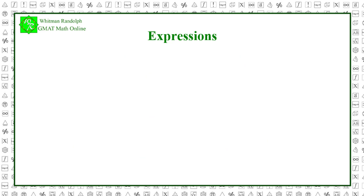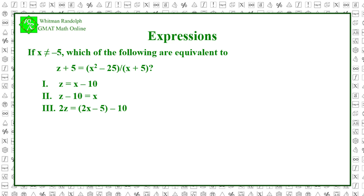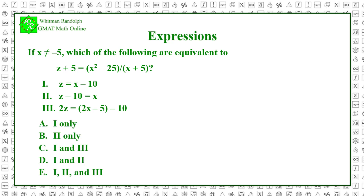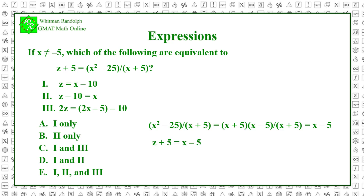Here are two additional problems involving expressions. If x does not equal minus 5, which of the following are equivalent to z plus 5 equals x squared minus 25 over x plus 5? The choices are: z equals x minus 10; z minus 10 equals x; 2z equals 2x minus 5 minus 10. To find the solution: x squared minus 25 over x plus 5 equals (x plus 5)(x minus 5) over (x plus 5), which equals x minus 5. So z plus 5 equals x minus 5, and z equals x minus 10. This means choice 1 is equivalent.